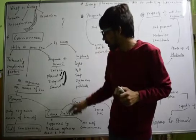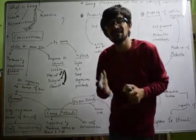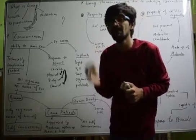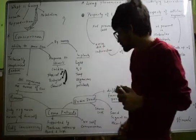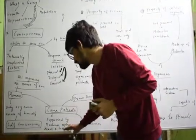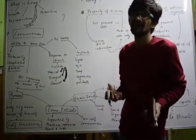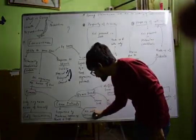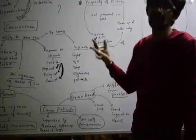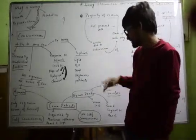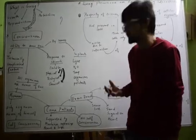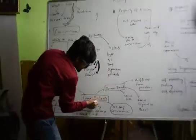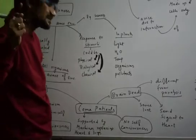In the coma patient, what happens is they are not able to sense the environment. Are they dead? According to me, they are not dead — their other body parts are still working. Coma patients are supported by machines replacing the heart and the lungs. There is no self-consciousness in the coma patient; they don't know what is happening around them. Some people say their ears are still working, but some biologists say that coma patients are basically under a long sleep in which the brain becomes partially inactive.